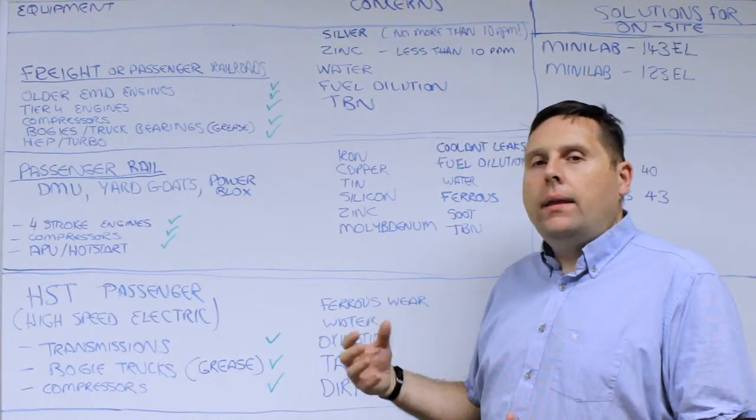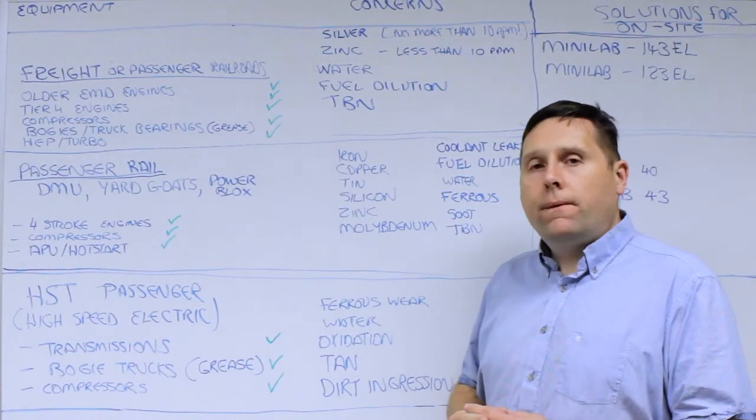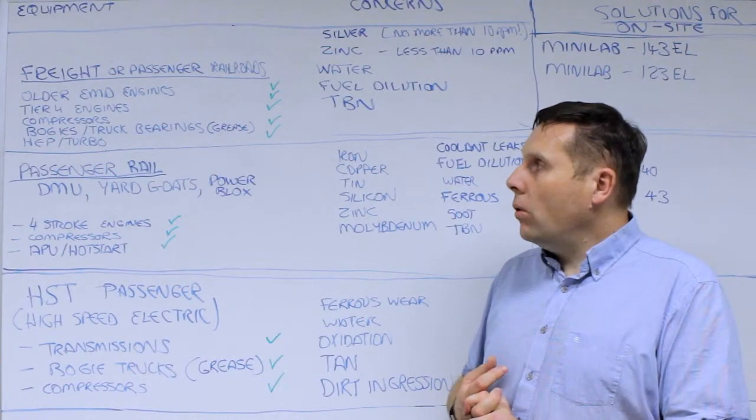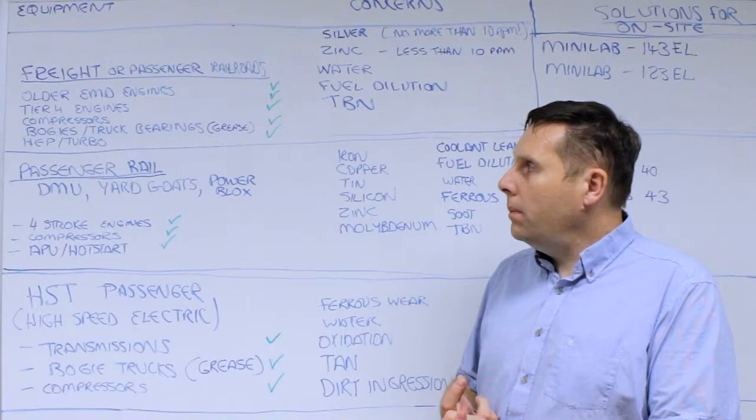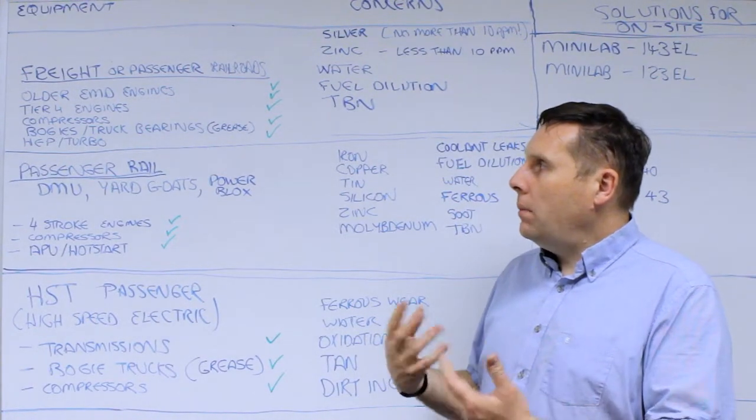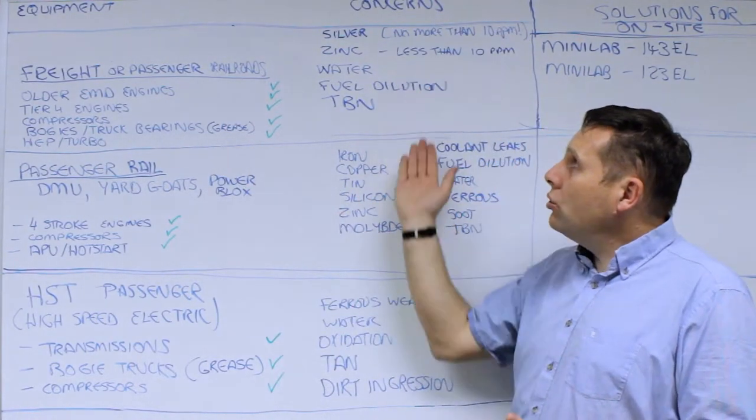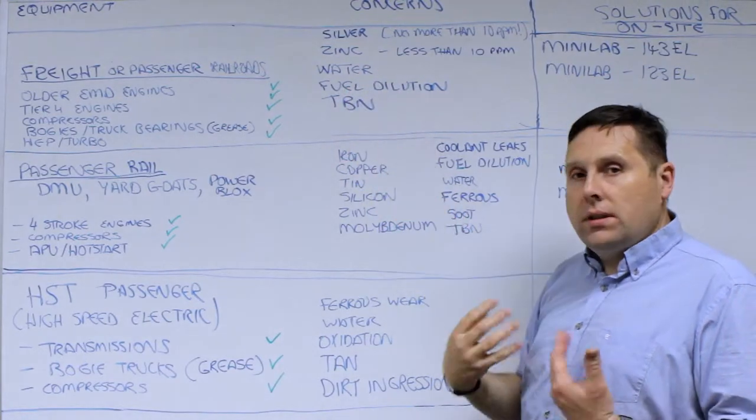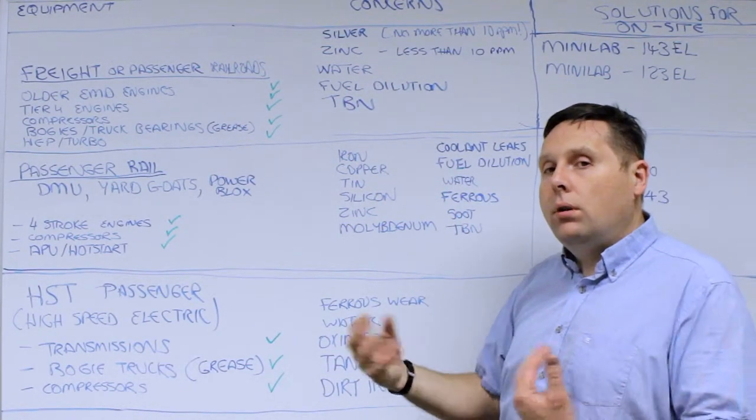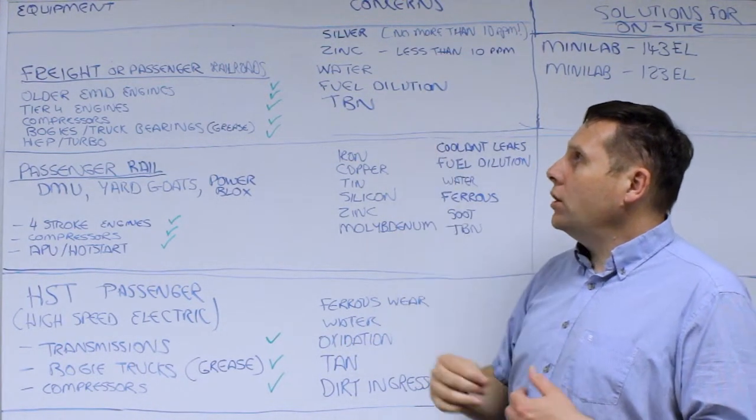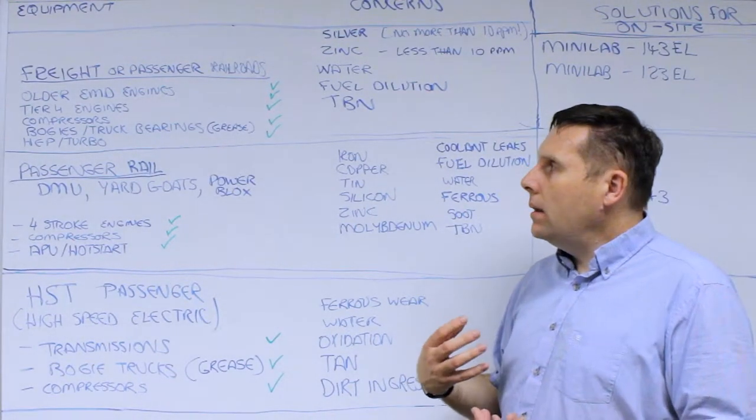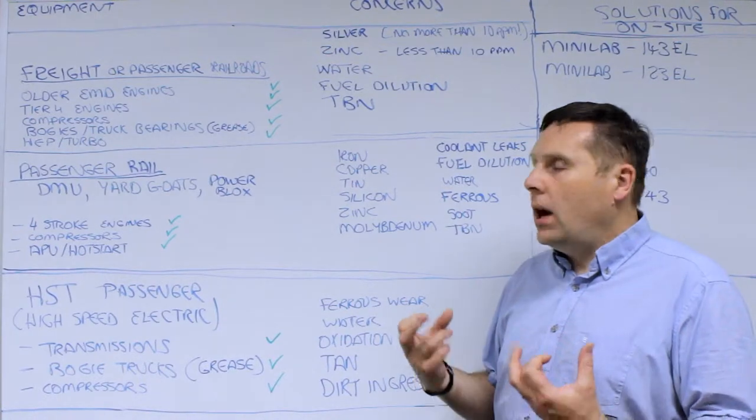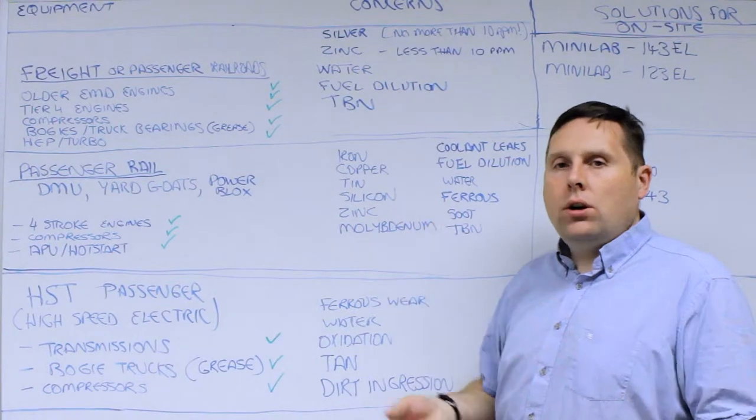First, freight or passenger railroads where the following are present: older EMD engines, newer Tier 4 engines, compressors, bogies and truck bearings, or head-end power turbos. Particularly where older EMD must be supported, the major concerns for these fleets are continuing to monitor silver for the engines and zinc, because even though the oils are zinc-free, they want to make sure they don't pollute it with any other oil—less than 10 ppm. They watch for water, fuel dilution, and TBN. From an engine perspective, the big engines don't wear much—they're usually kept on hot standby when not operating to keep everything running.